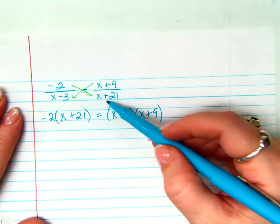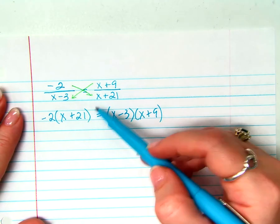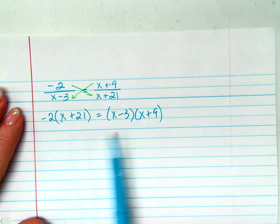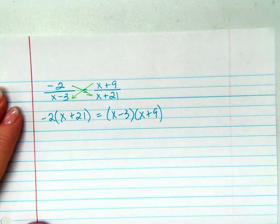As long as you're multiplying the diagonals and writing it down, and multiplying the diagonals and writing it down, we're going to set them equal to each other anyway, so it doesn't matter if this is on this side and this is on this side, as long as they're set equal to each other.